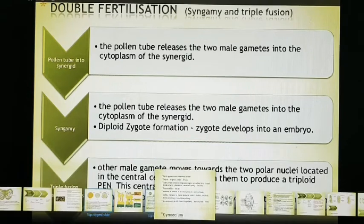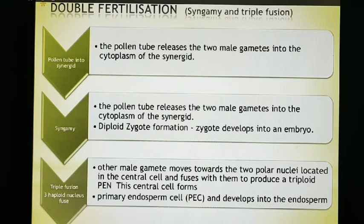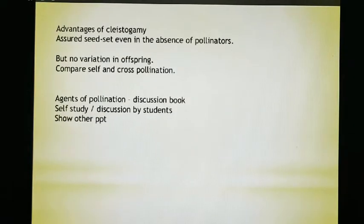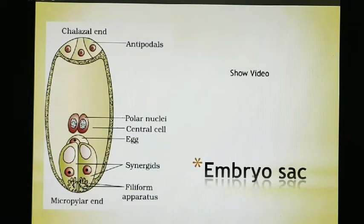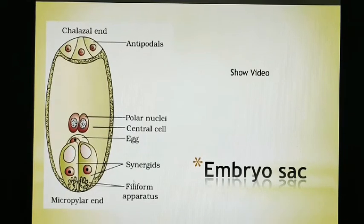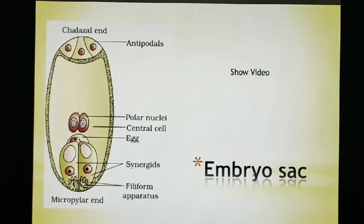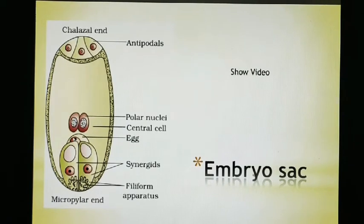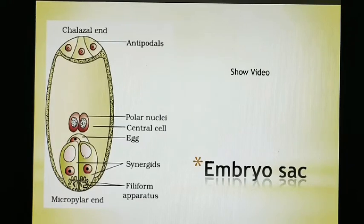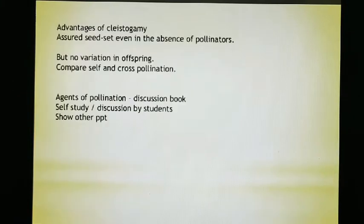Now talking about triple fusion: the second male gamete fuses with the two polar nuclei present in the central cell. Looking at the diagram — this is the egg, this is the micropylar end, this is the filiform apparatus, this is the pollen tube. After entry through the filiform apparatus, the egg fuses with one male gamete — this is syngamy. Then the remaining male gamete fuses with the central cell containing two polar nuclei. When this male gamete fuses with the two polar nuclei, it is called triple fusion.